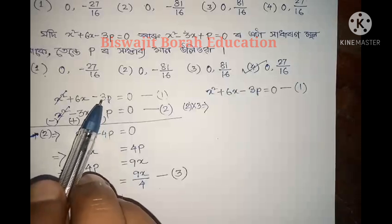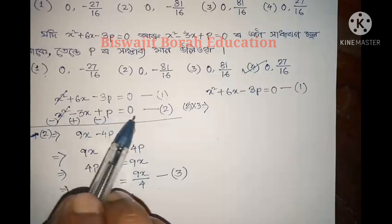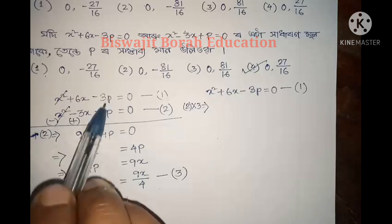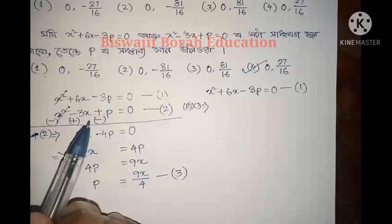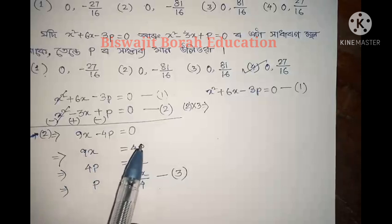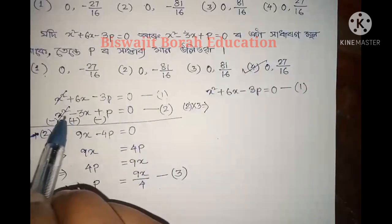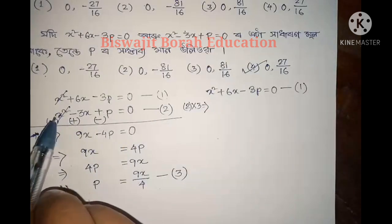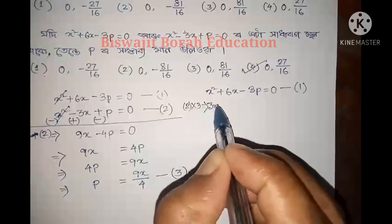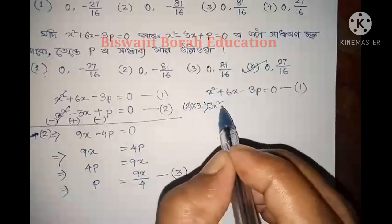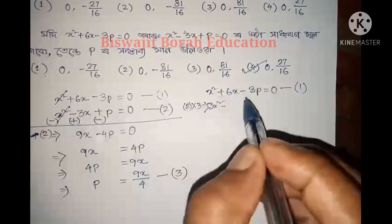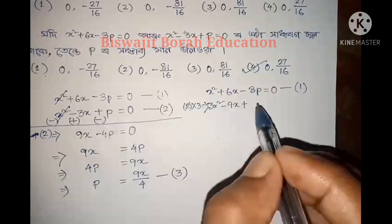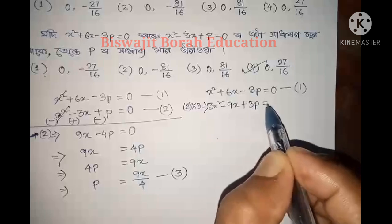What does this mean? We have 3p, and substituting p equals 9x/4, we get 3 times 9x/4. So we have x squared plus 6x minus 3x squared equals 0, which simplifies to give us the factored form with x squared terms combined, equal to 0.